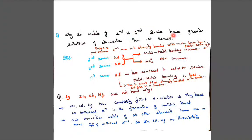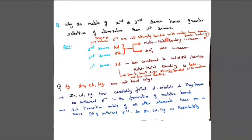Next we'll pass on to our questions. Why do metals of second and third series have greater enthalpy of atomization? These are in NCERT question only. You just take the book and see the textbook exercises. So why do metals of second and third series have greater enthalpy of atomization than first series? Second series are larger in size. Valence electrons are not strongly bonded with the nucleus. Have greater tendency to form metal bonding. So delta H0 also increases.